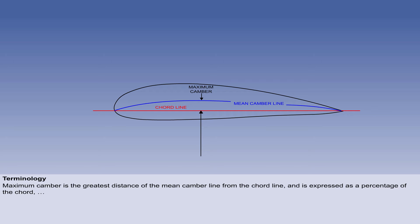Maximum camber is the greatest distance of the mean camber line from the cord line and is expressed as a percentage of the cord, and its location along the cord line as a percentage of the cord measured from the leading edge.